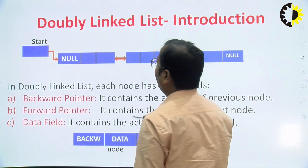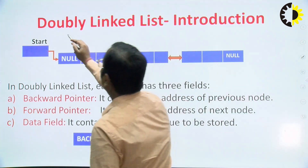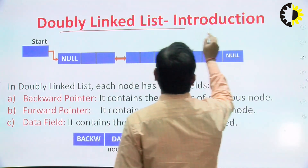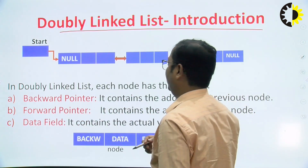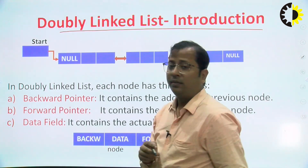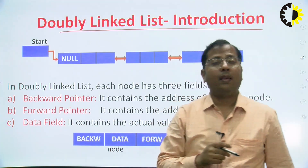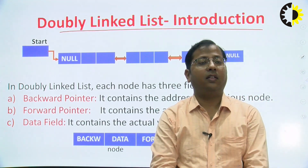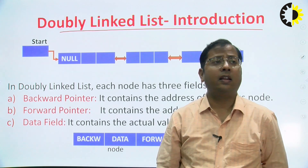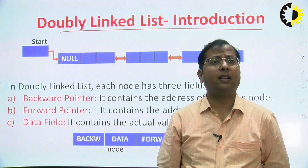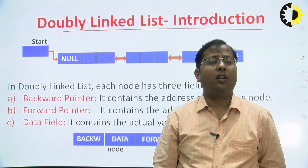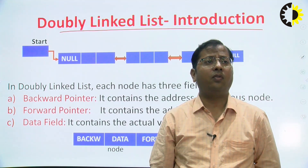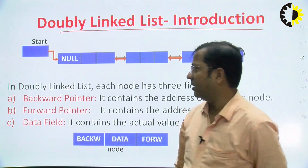First of all, we will understand why we use a doubly linked list. If we use a single linked list, there is a limitation. In the single linked list, we can traverse only in one direction, that is the forward direction.